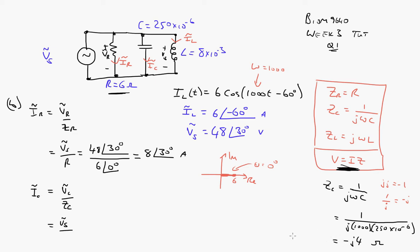So it's going to be 4. I think I've gone off the page, apologies. So 4 at an angle of minus 90 degrees. That's ZC. So we can put that over here. So it would have been VS divided by ZC. So it's going to be equal to VS was 48 at an angle of 30 degrees, and ZC was 4 at an angle of minus 90 degrees.